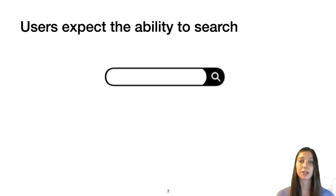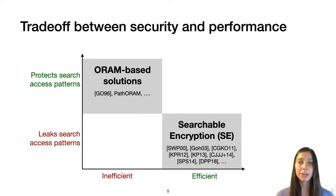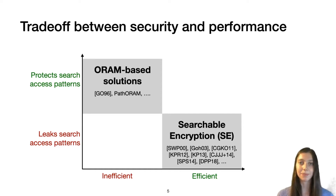Users have grown accustomed to the ability to search over their documents, so given some keyword like Apple, they expect to get back all the documents containing that keyword. This is a challenge for end-to-end encrypted file systems, because the server can't decrypt the documents in order to search over their contents. For the past few decades, academics have studied this problem, and existing solutions generally fall into one of two categories: searchable encryption schemes that are efficient but leak search access patterns, and ORAM-based solutions that are inefficient but protect search access patterns.